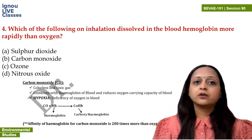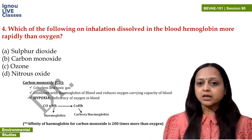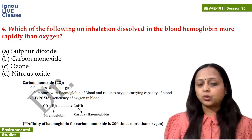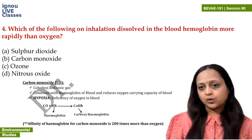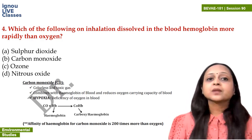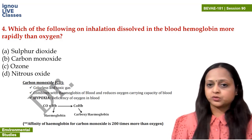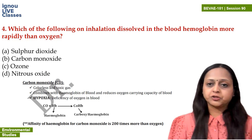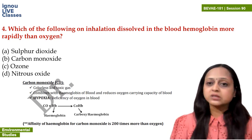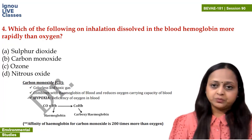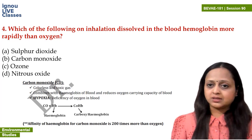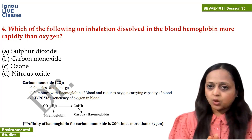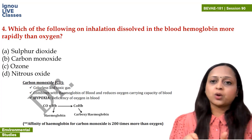Question 4: which of the following, on inhalation, dissolves in blood hemoglobin more rapidly than oxygen? Options are sulfur dioxide, carbon monoxide, ozone, or nitrous oxide. The major function of hemoglobin is to circulate oxygen in our body. When we inhale oxygen, hemoglobin attaches to oxygen and makes oxyhemoglobin - this is normal, and through this oxygen circulates throughout the body.